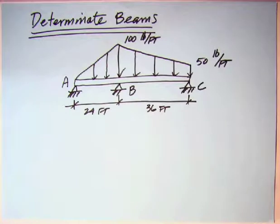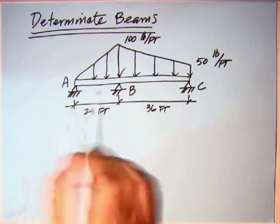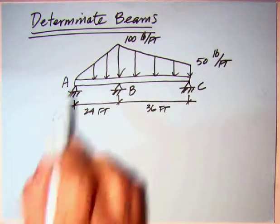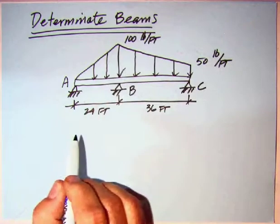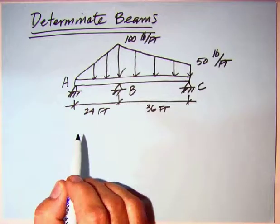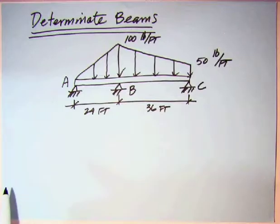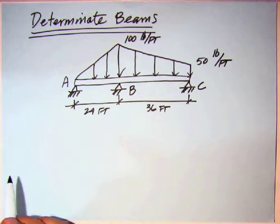The way I'd like to introduce this topic on determinate beams is to start with the beam that was used in the distributed loads instructional companion. The example where we had three pins, we weren't really concerned with that at that particular point, but we had a distributed load that went up to 100 pounds per foot, then dropped to 50 pounds per foot. We would end up with the following free body diagram.